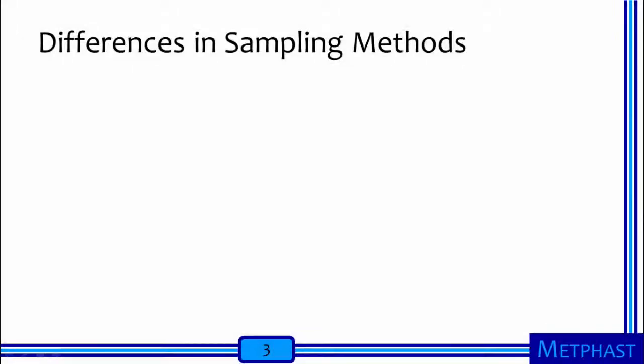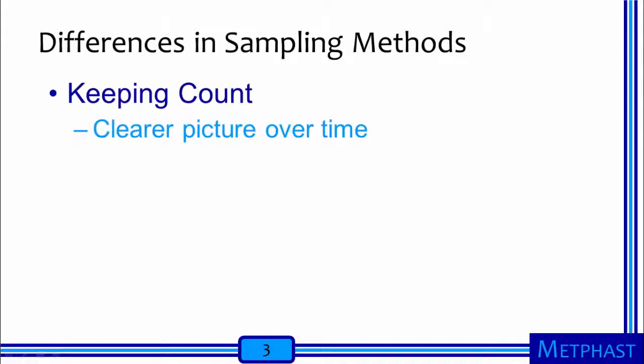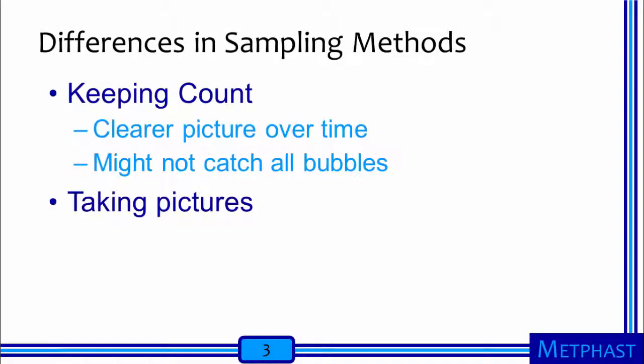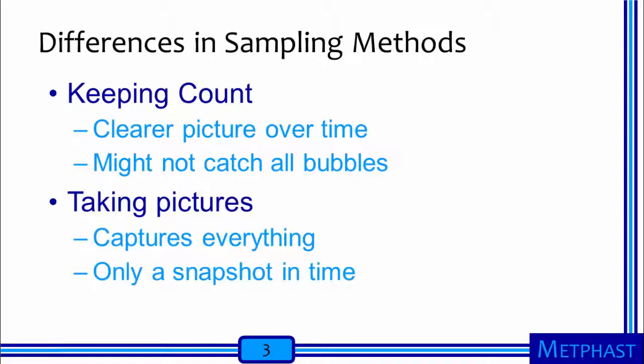These different sampling methods have their advantages and disadvantages that are not unlike actual sampling methods. For example, keeping track of the bubbles on your own gives you a clearer picture over time of how many bubbles were blown, but there is a possibility that the individual may miss a few bubbles. On the other hand, taking pictures with your phone will capture all of the bubbles, but it is only a snapshot in time.